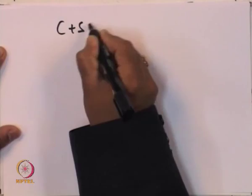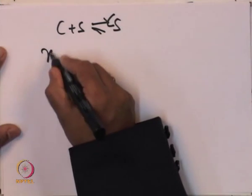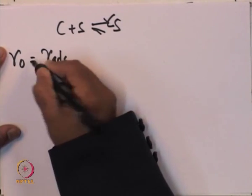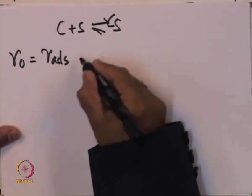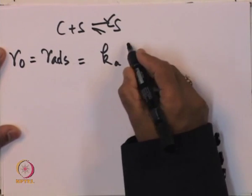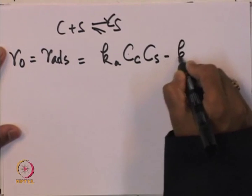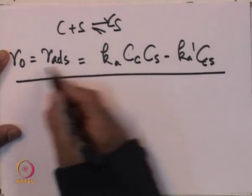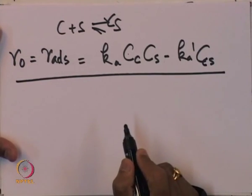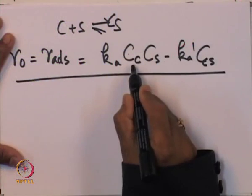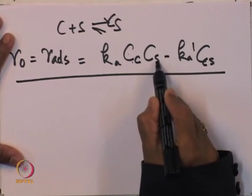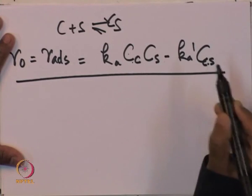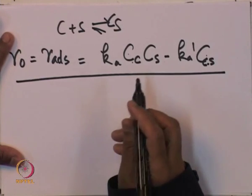When adsorption is the rate-controlling step, the rate of adsorption equals the overall rate: r_ads = K_A × C_C × C_S − K_A_dash × C_CS. This equation contains the bulk concentration C_C, but also the vacant site concentration C_S and the adsorbed species concentration C_CS, which are unknown. These will be obtained from the equilibrium steps — the surface reaction and desorption — which are now instantaneous.